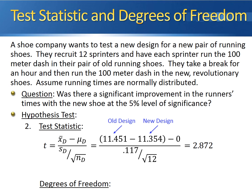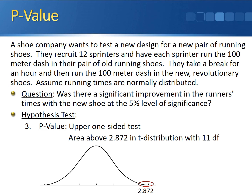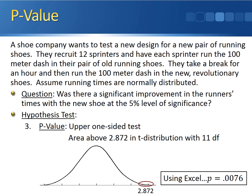The degrees of freedom are calculated by taking the sample size minus 1. 12 minus 1 gives us 11 degrees of freedom. For the p-value, we have an upper one-sided test, so the p-value is calculated by taking the area above 2.872 in a t-distribution with 11 degrees of freedom. Using Excel, we can get the exact value of 0.0076.